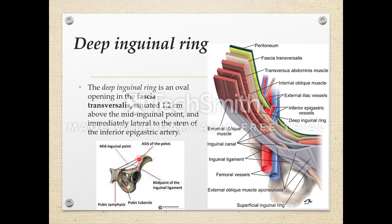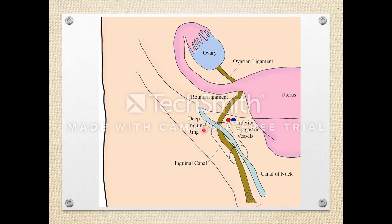Note the distinction: the mid-inguinal point is the midpoint between the anterior superior iliac spine and the pubic symphysis, whereas the midpoint of the inguinal ligament is the midpoint between the anterior superior iliac spine and the pubic tubercle. In the diagram, the deep inguinal ring and superficial inguinal ring are visible with the inguinal canal between them.